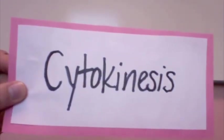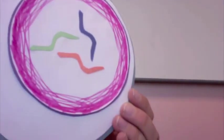PMAT has completed, which means cytokinesis follows to complete the process. In cytokinesis, cytoplasm and organelles duplicate and are divided into two equal parts. Here the cell is finally split into two.